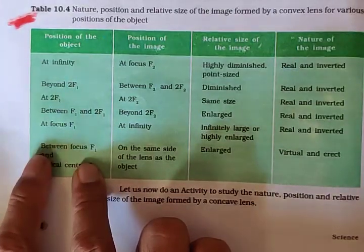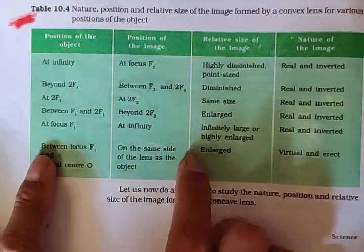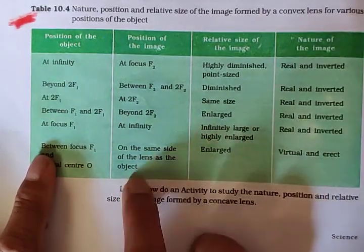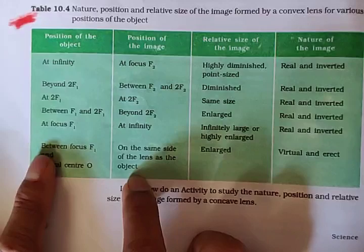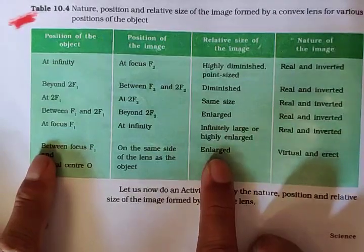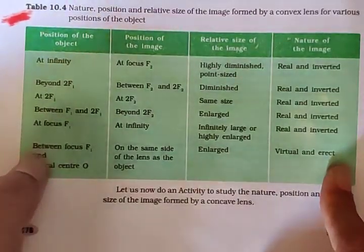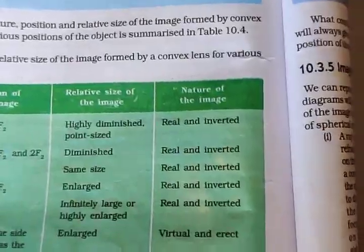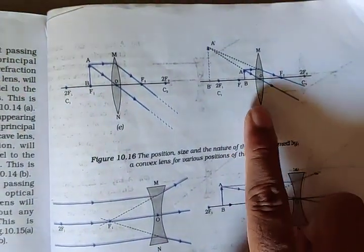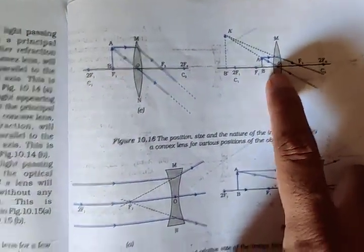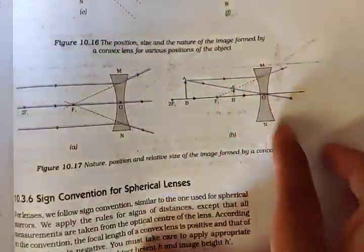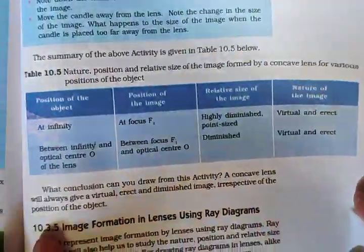This is relevant to the lens. On the same side of the lens as the object, the image is enlarged, virtual, and erect. We have to focus on this particular case where the image is virtual and erect. These cases are relevant to F2. This table covers all image formation cases for a convex lens.